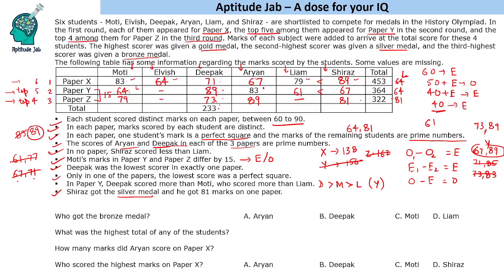Now we find the medals by adding each student's total. Deepak's total is 162 plus 64 equals 226. Aryan's total is 150 plus 89 equals 239. Shiraz's total is 170 plus 67 equals 237. So gold goes to Aryan with 239, silver goes to Shiraz with 237, and bronze goes to Deepak with 226. The highest total of any student is 239, Aryan's score in paper X is 67, and the highest marks in paper X belong to Shiraz.